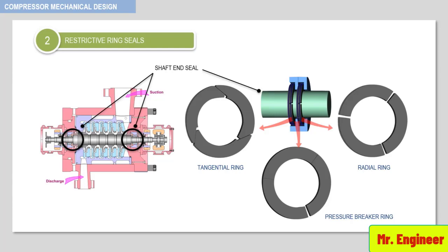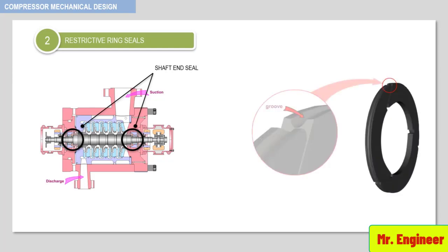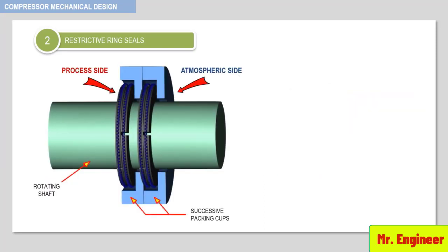The ring segments are held together by a spring which pressurizes the packing ring against the rotating shaft. As the packing rings wear, the segments are progressively compressed against the shaft thanks to the spring forces.